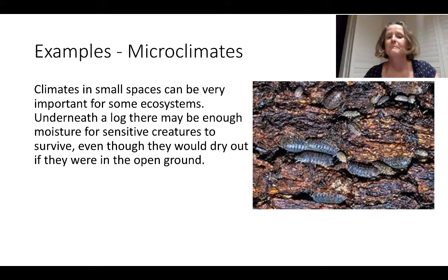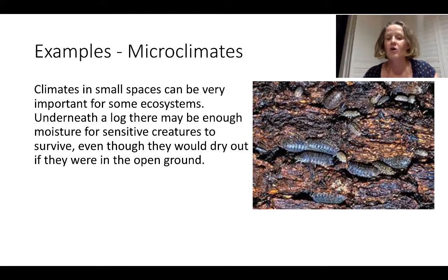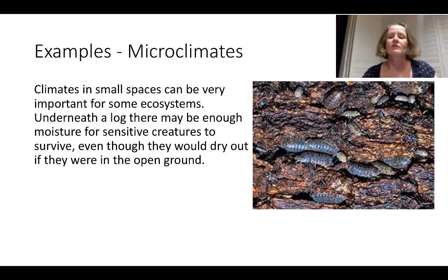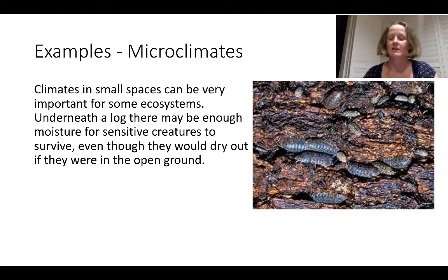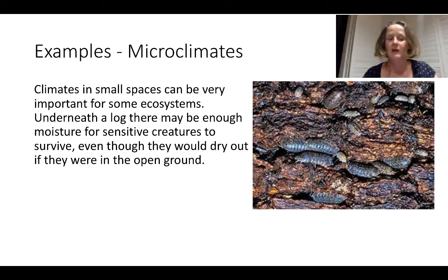You can also think about microclimates. My example here is the area underneath a log. You might have a log in a forest — it might be quite a dry area in general — but underneath the log it could be quite damp, humid and dark, and there are lots of areas where things can live in different habitats. So you might find you have ecosystems that exist within microclimates.